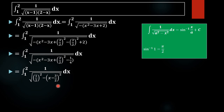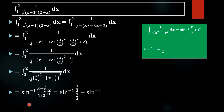Now we can integrate this using the formula: integral of 1 by square root of (a squared minus x squared) dx equals sin inverse of (x by a). Here a equals 1 by 2, and the x squared term is (x minus 3 by 2) whole squared. Applying this formula, we get sin inverse of (x minus 3 by 2) divided by (1 by 2). This is our value of the integral; next we apply the limits.